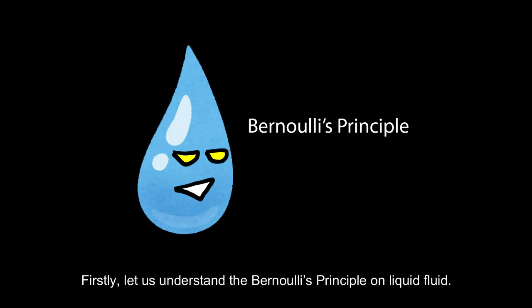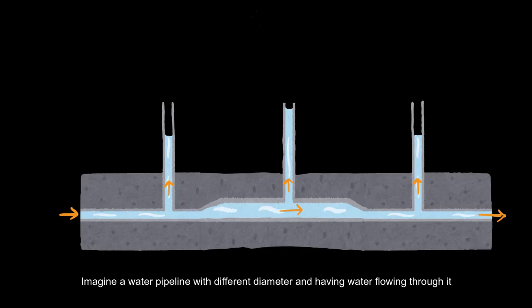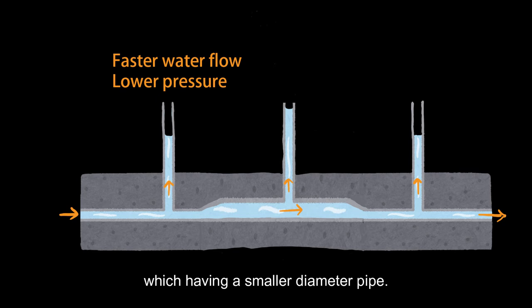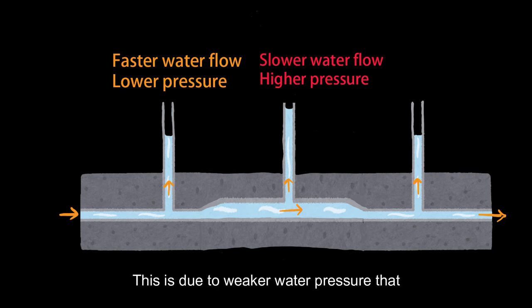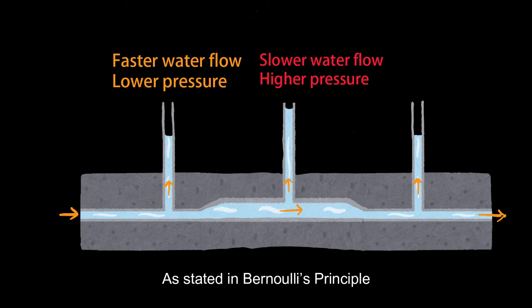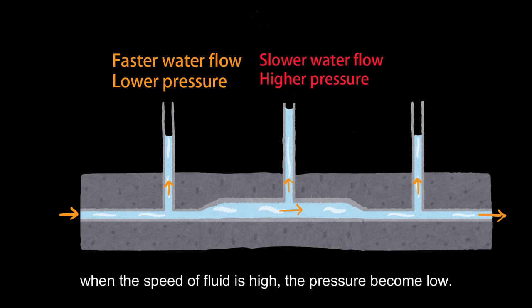First, let's understand the Bernoulli Principle applied to liquid fluid. Imagine a water pipeline with different diameters having water flowing through it. You can observe that the water level is lower at the point which has a smaller diameter pipe. This is due to weaker water pressure caused by faster water flow in the smaller diameter pipe. As stated in Bernoulli's Principle, when the speed of a fluid is high, the pressure becomes low.